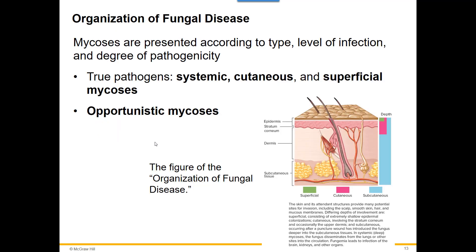We organize fungi into different types: true pathogens that cause systemic diseases affecting any body system, cutaneous ones affecting the skin, and superficial ones barely getting underneath the skin. We also have opportunistic fungi — not true pathogens — which require the host to be immunocompromised. If you're already healthy, you shouldn't be too worried about opportunistic pathogens. But elderly individuals or anyone suffering from other diseases that weaken the immune system are at high risk.